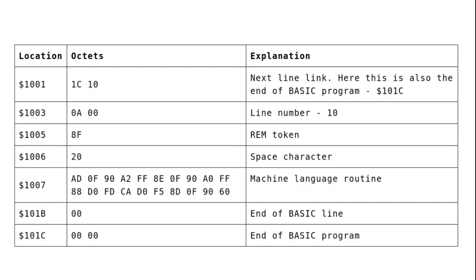Turning now to storing machine code in REM statements, we can see in this table how it's laid out. We start at location 1001 hex — that's because I'm using an unexpanded VIC, and that's where the start of BASIC memory is. If you're using a VIC with more memory, you'll use a different location. The first location contains a word which is the next line link.